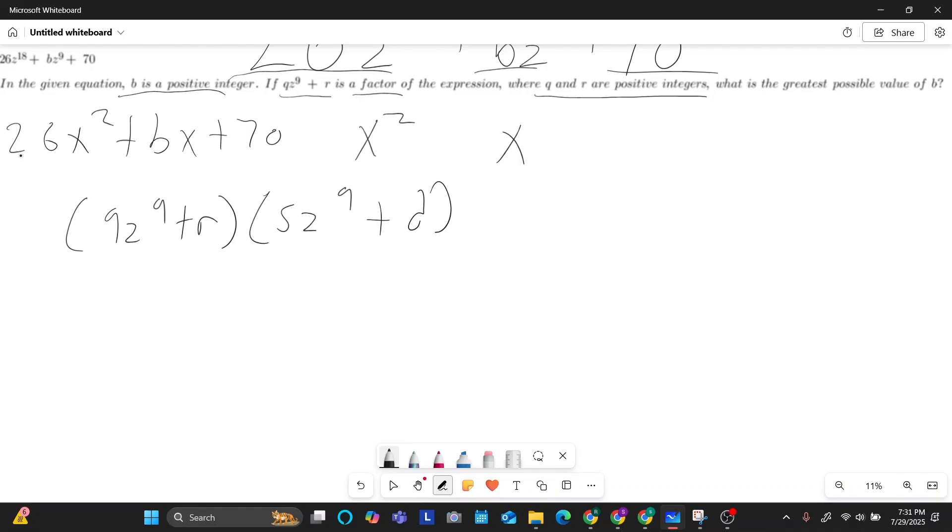Okay, so now all this is going to foil out to this 26z to the 18 plus bz to the nine plus 70. So foiling this out, I would get qsz to the 18 plus qdz to the nine plus rsz to the nine plus rd. And then I can actually take this middle term right here. And instead of dividing it into two terms, I can take out a common factor of z to the nine, and then leave in qd plus rs. And then these remain constant. So all that equals this right here.